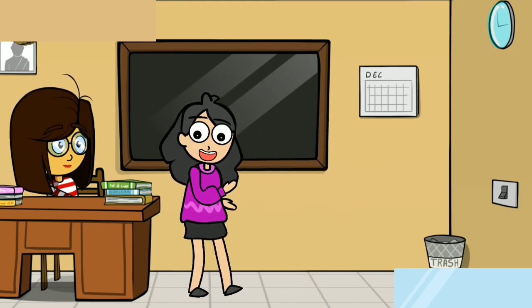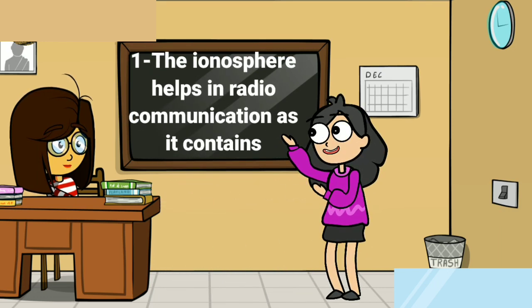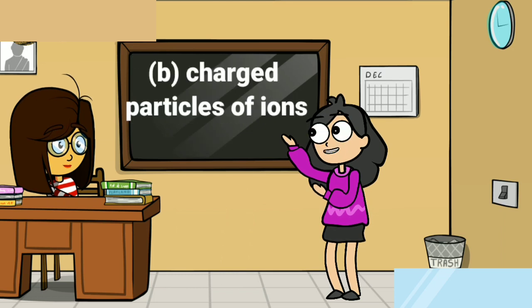Now let's start with choose the correct option. The first question: the ionosphere helps in radio communication as it contains — the answer is option B, charged particles called ions.